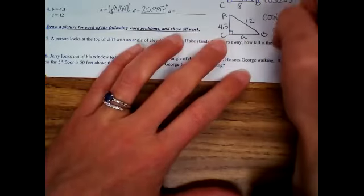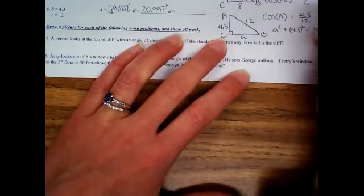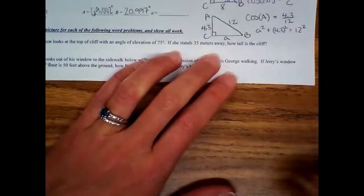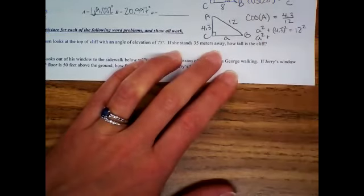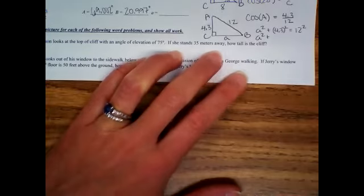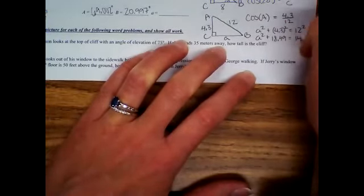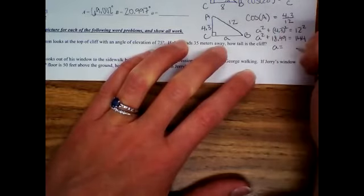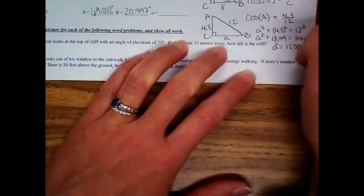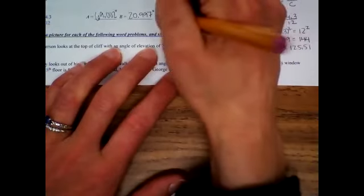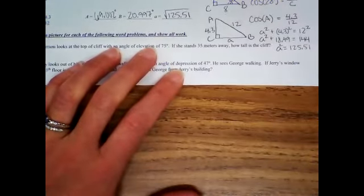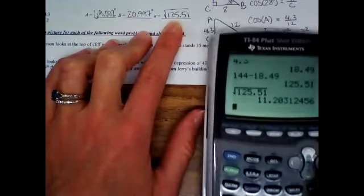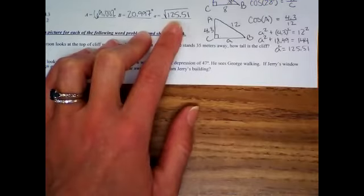And then to get A, we're going to do Pythagorean theorem. A squared plus 4.3 squared equals 12 squared. A squared plus 4.3 squared gives me 18.49 equals 144. Subtract that over, I got 125.51 and then square root. That's not going to split. We can't reduce that. I would take this answer, or if you were to type it in and get the decimal 11.203, that's fine too. I would take either answer.